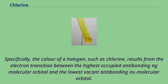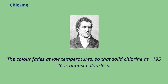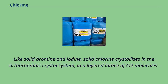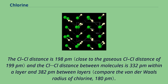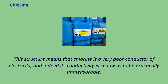Specifically, the color of a halogen such as chlorine results from the electron transition between the highest occupied antibonding πg molecular orbital and the lowest vacant antibonding σu molecular orbital. The color fades at low temperatures, so that solid chlorine at −195°C is almost colorless. Like solid bromine and iodine, solid chlorine crystallizes in the orthorhombic crystal system, in a layered lattice of Cl₂ molecules. The Cl-Cl distance is 198 pm and the Cl···Cl distance between molecules is 332 pm within a layer and 382 pm between layers. This structure means that chlorine is a very poor conductor of electricity, and indeed its conductivity is so low as to be practically unmeasurable.